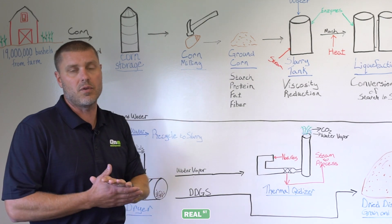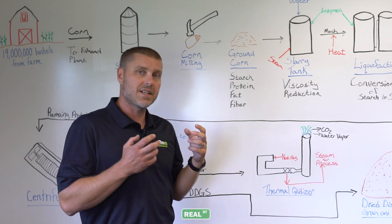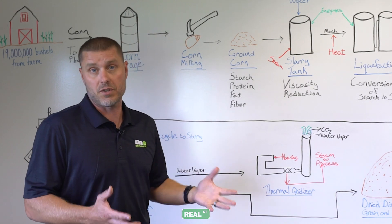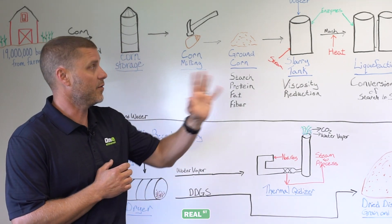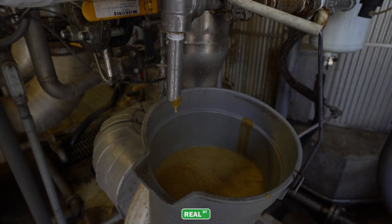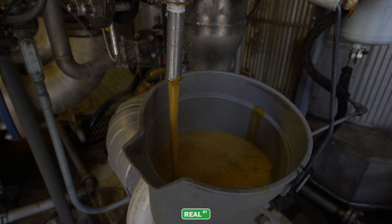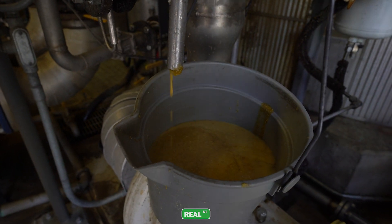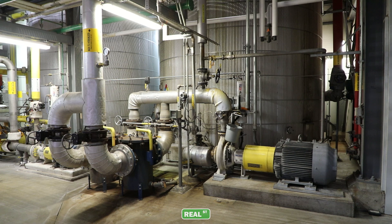Starch is the main component that we use to create ethanol. That starch gets converted into a fermentable sugar, and that fermentable sugar gets converted to ethanol in fermentation. The protein, fat, and fiber are along for the ride for most of this process, until they can be converted into a high-value animal feed.